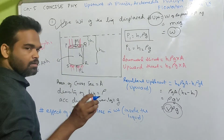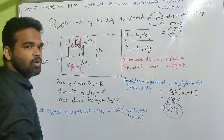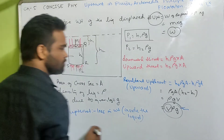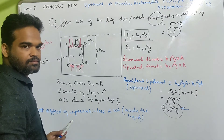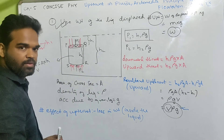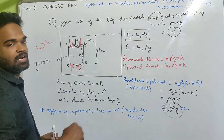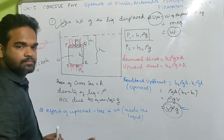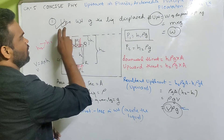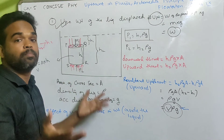Whenever a body is partially or wholly submerged into water, there is an uptrust due to which there is a loss in weight - we feel that it is lighter. From this expression, uptrust depends upon the volume of the liquid displaced by the submerged part of the body, the density of the liquid, and the acceleration due to gravity at that place. Since G is almost constant, the main factors are V and rho. Uptrust equals the weight of the liquid displaced - and this is what Archimedes' principle states.